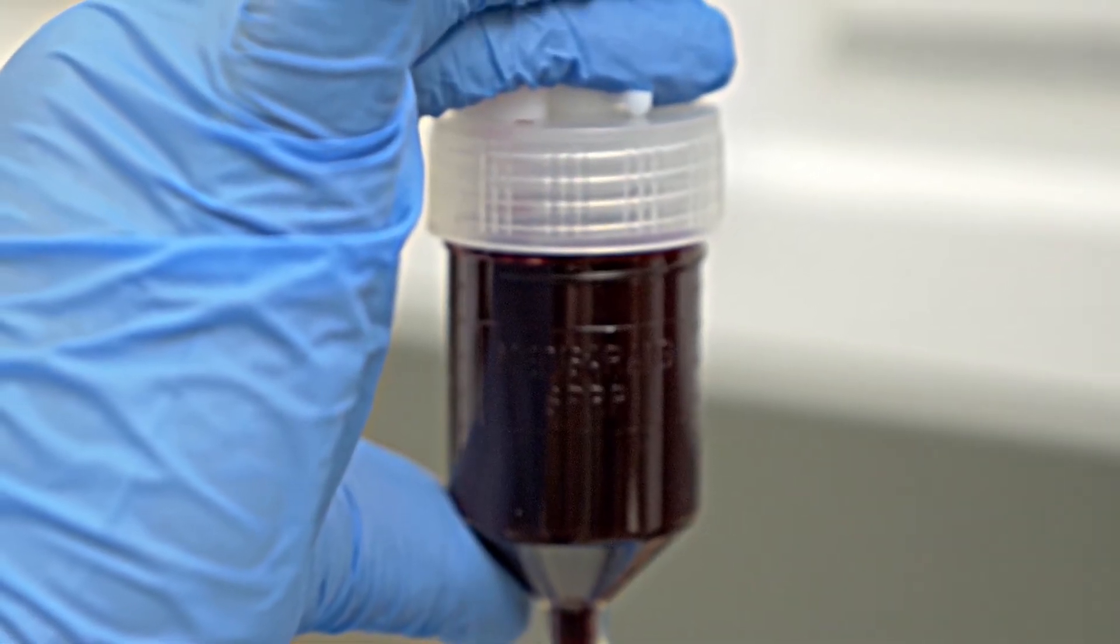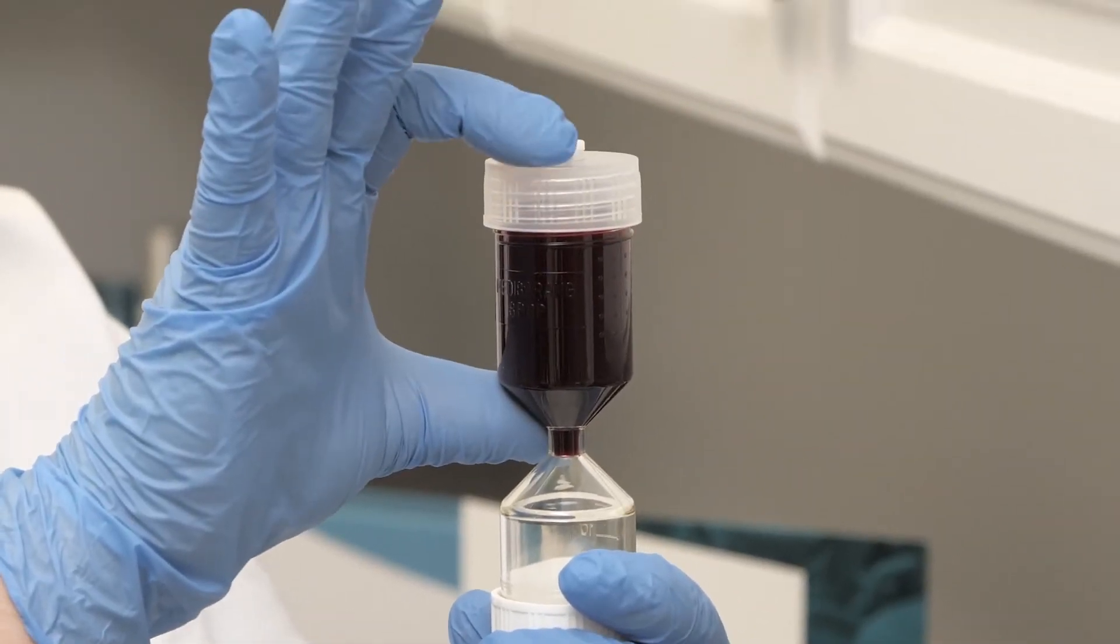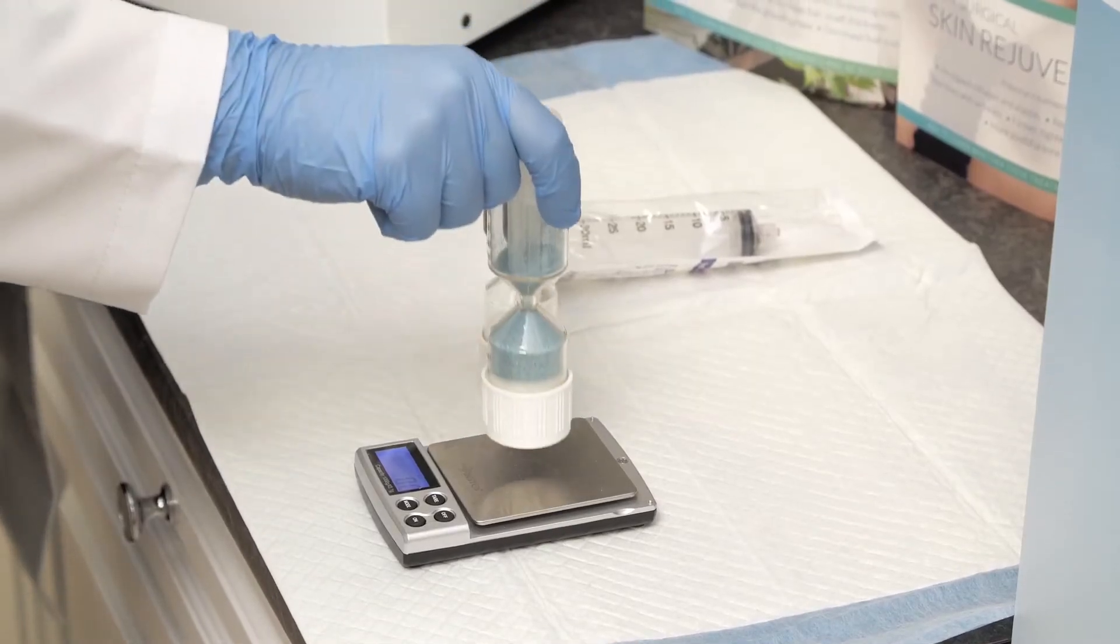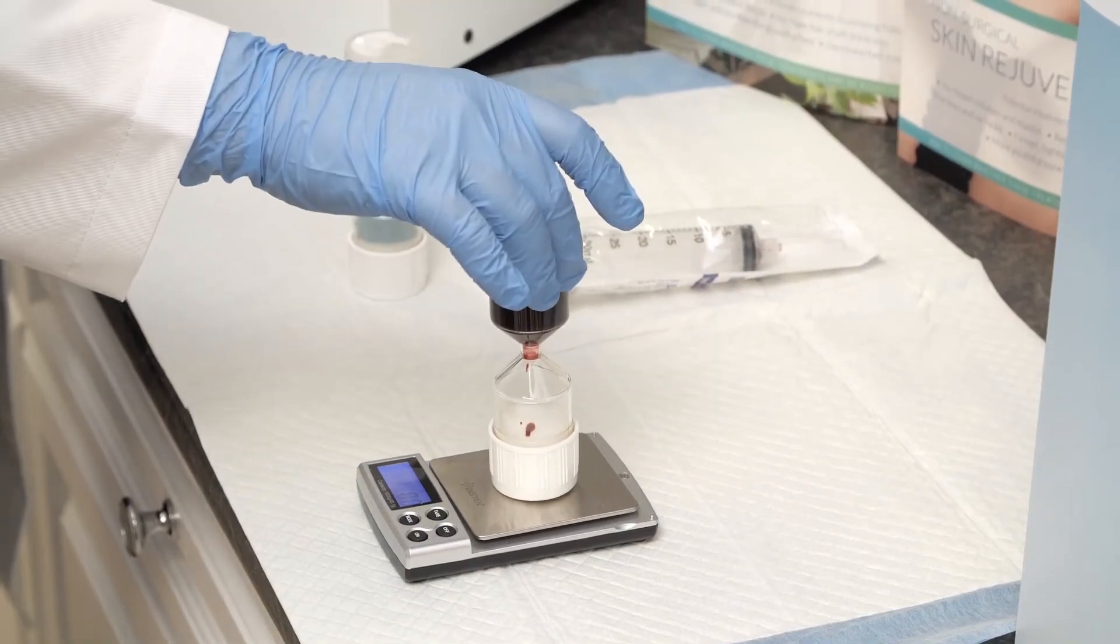Re-seal the outer port cap after the transfer by closing. Using your index finger press down on both the outer port cap and inner port cap ensuring they are both closed. Ensure the weight of the World PRP tube and counterweight are equal within a 5 gram variance.